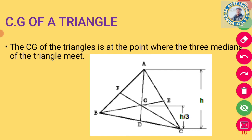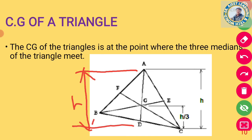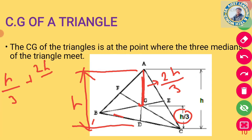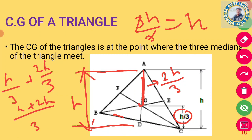Triangle के center of gravity पर ध्यान देना है। अगर triangle की height h है, तो center of gravity बेस से h/3 पे होगा। यह part h/3 है और ऊपर का part 2h/3 है। Verification: h/3 + 2h/3 = 3h/3 = h ✓